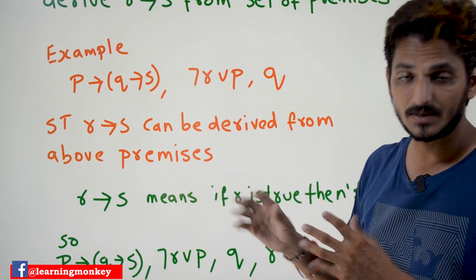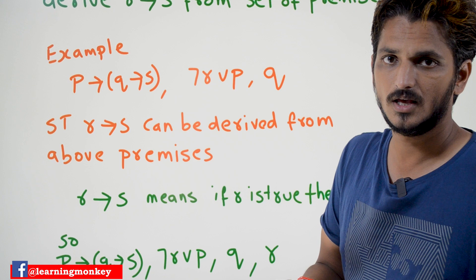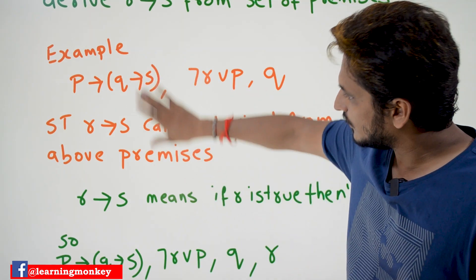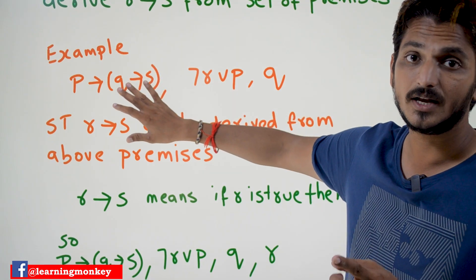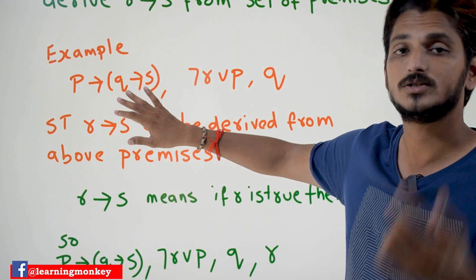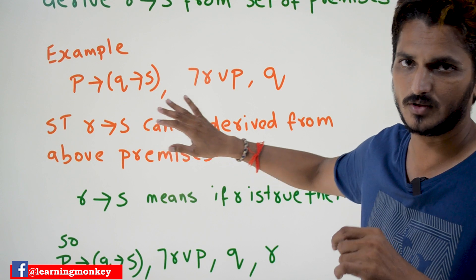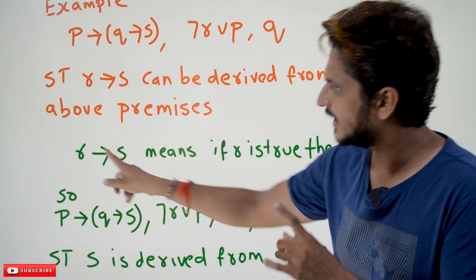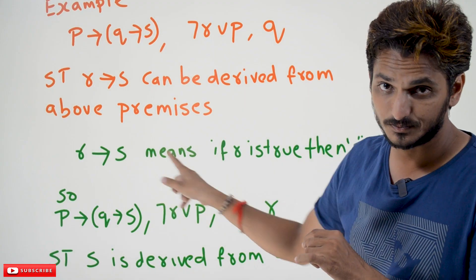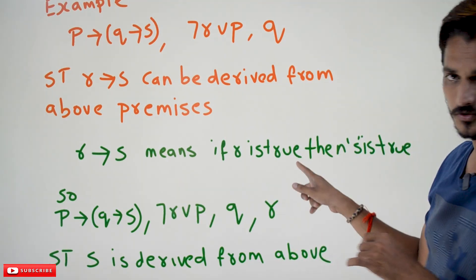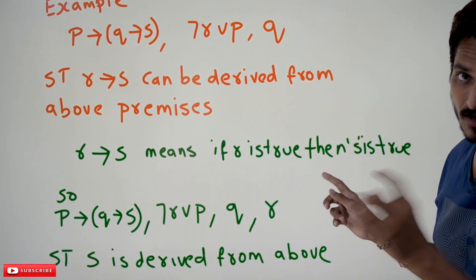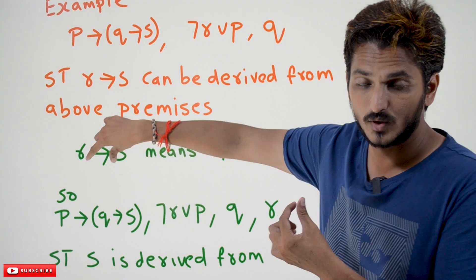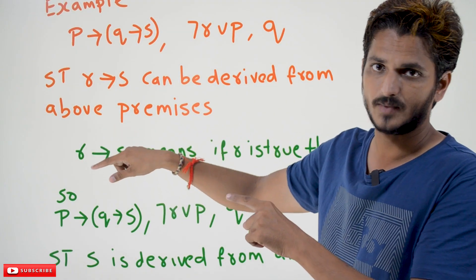These types of examples we have done in our previous classes. The point you need to understand is that this question, whatever is provided here, can be written in another form also. The same question can be written as: R implies S means if R is true, then S has to be true. That is the meaning of R implies S. With this meaning, we are going to change the question into another format.